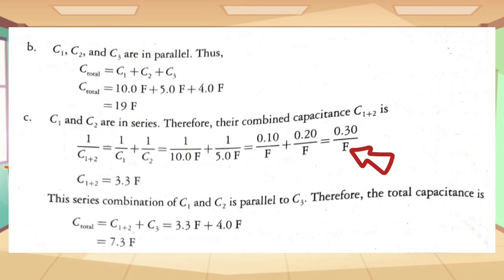We now have 1 over 10 farads plus 1 over 5 farads. We now divide 1 by 10 and 1 by 5. We now have then 0.10 over 1 farads plus 0.20 over 1 farad. Getting the sum of those values, we now get 0.30 over 1 farad. Getting the reciprocal of that, we now have 1 over 0.30. 1 divided by 0.30 is equal to 3.3 farads. So, the combined value of C1 and C2 is now equal to 3.3 farads.